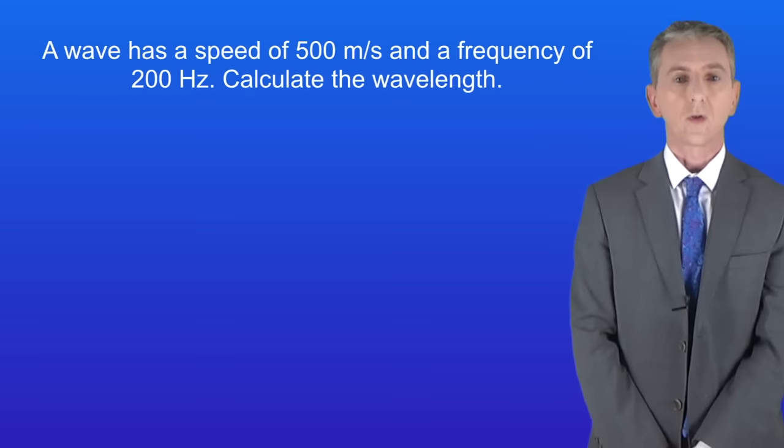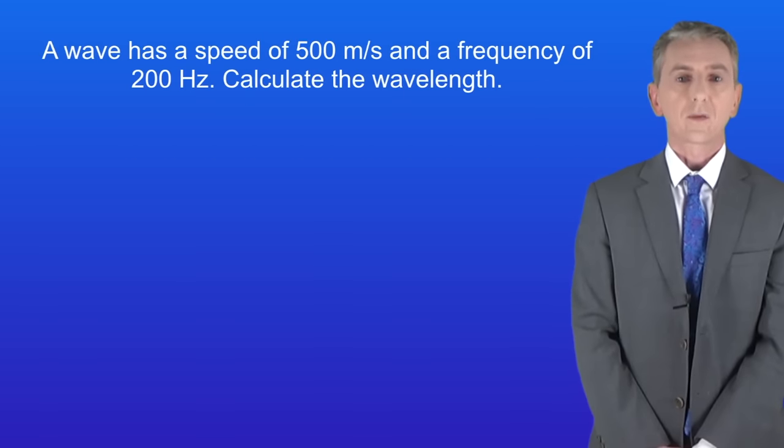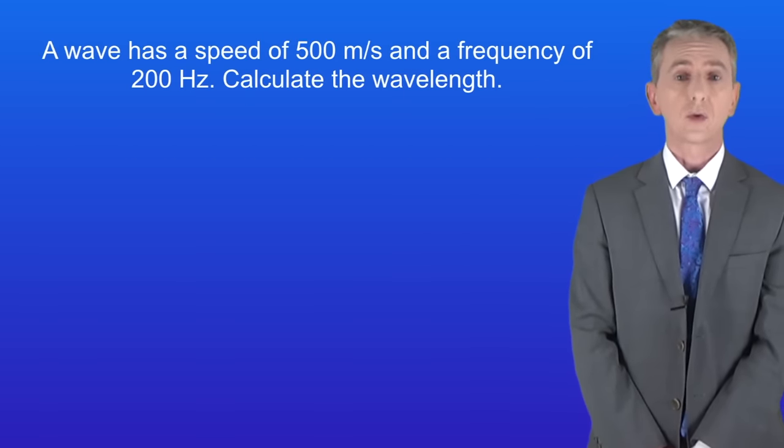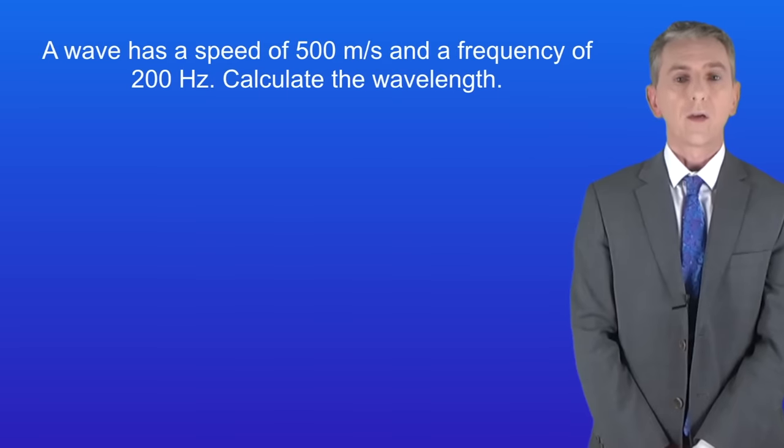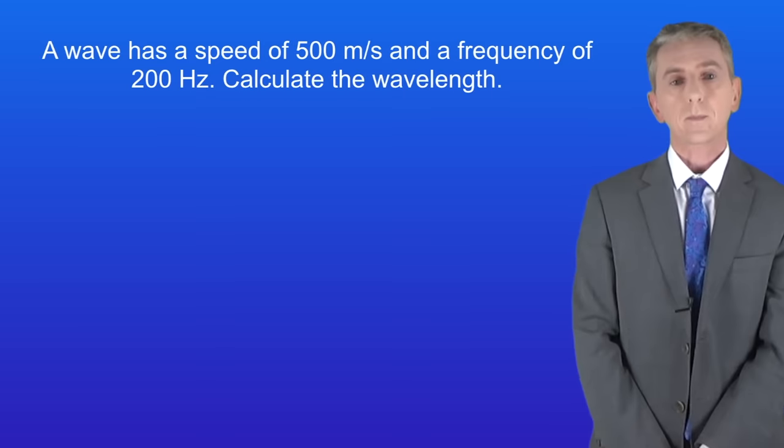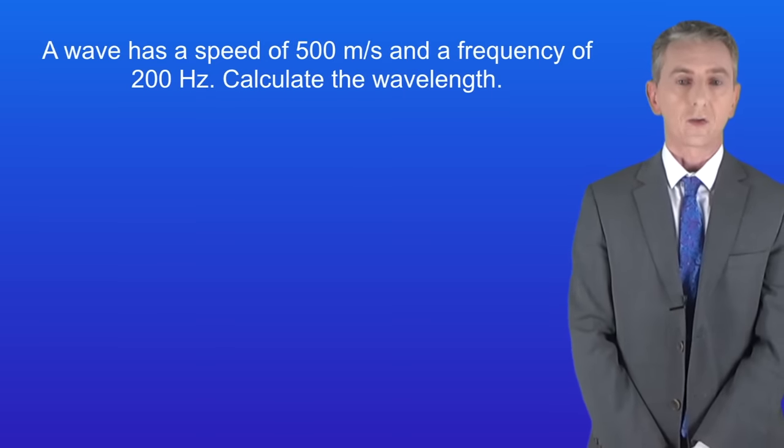Here's a final question for you. A wave has a speed of 500 meters per second, and a frequency of 200 Hertz. Calculate the wavelength. Now, to answer this question, you'll need to rearrange the wave equation for wavelength. Or if you prefer, you can simply use a triangle. So pause the video and try this yourself.